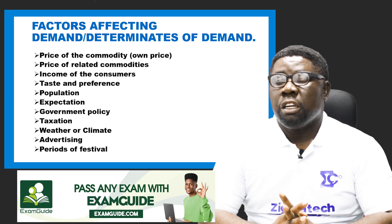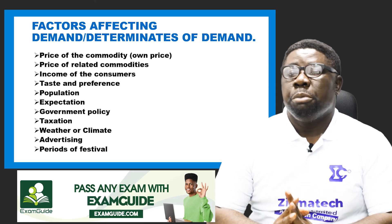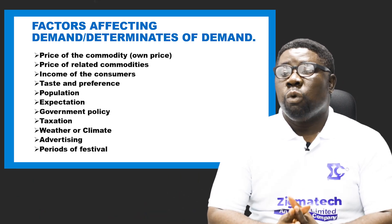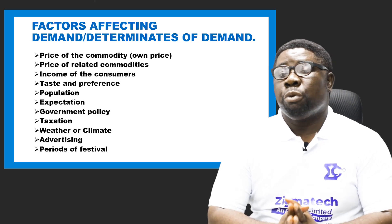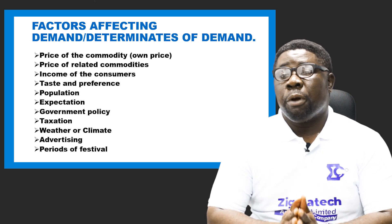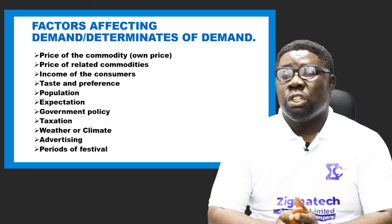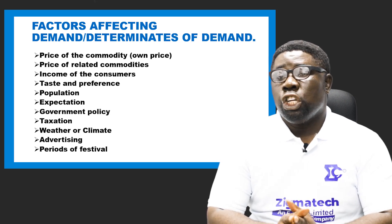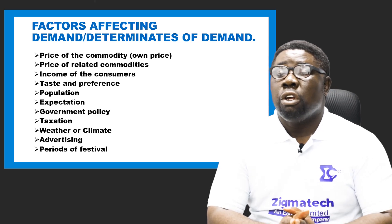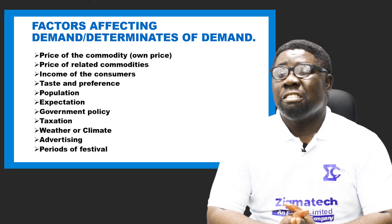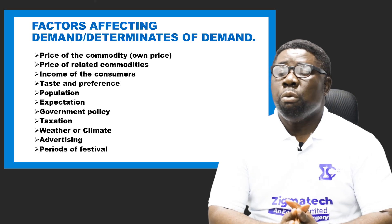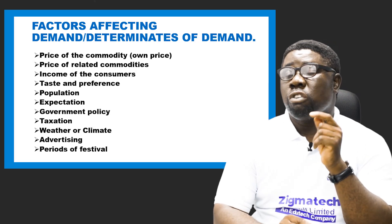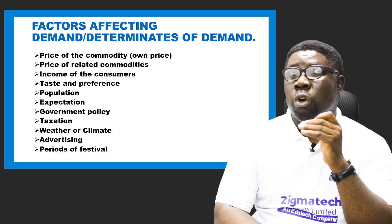Now it is important to understand the difference between change in demand and change in quantity demanded. I want to divide the factors into two parts. The first part is the price of the commodity — called the own price — and the second part is all other factors, from price of related commodities to period of festivals. The own price of the commodity causes a change in quantity demanded, while all other factors cause a change in demand.